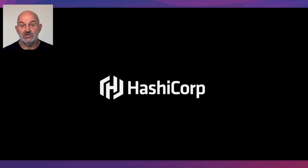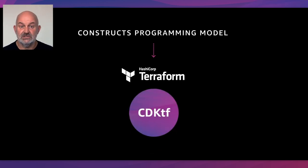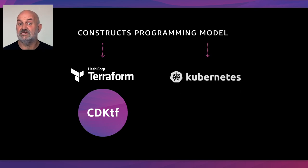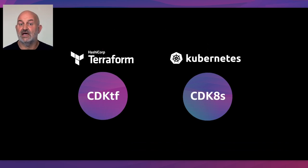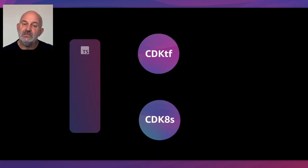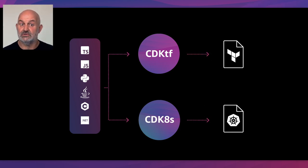One example is HashiCorp. AWS partnered to use the construct programming model to create a CDK for Terraform, called CDKTF. In addition, AWS used the construct programming model to create a CDK for Kubernetes, called CDK8s. These third-party CDKs allow developers to synthesize Terraform templates and Kubernetes manifests using a familiar programming language, and each provides a command-line interface allowing you to initialize your Terraform and Kubernetes projects, import resources, and more. The CDK has become the de facto software development framework internally at AWS, and customers are following suit.